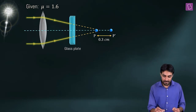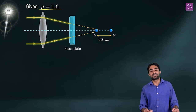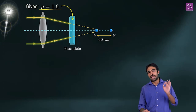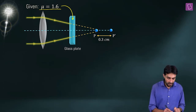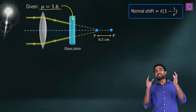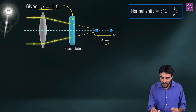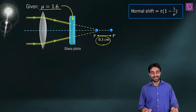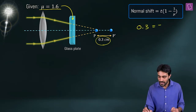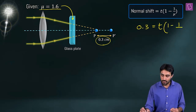In our question, the refractive index was given to be 1.6 — this is the refractive index of the glass plate. The formula is: normal shift = T × (1 − 1/mu). We know the shift is 0.3 cm, so: 0.3 = T × (1 − 1/1.6). Since 1/1.6 = 10/16 = 5/8, we have 0.3 = T × (1 − 5/8) = T × 3/8.